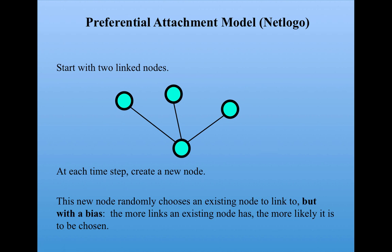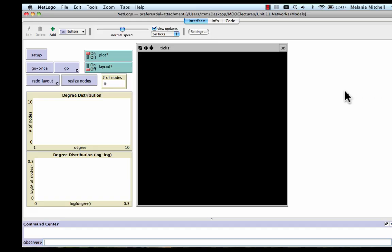So let's see what that model looks like. Here's the interface for preferentialattachment.nlogo, which is one of the models in the NetLogo models library. So you can get it there, or else you can download it from our course materials page. So I'm going to set up.